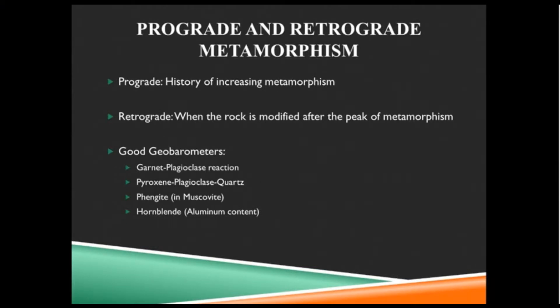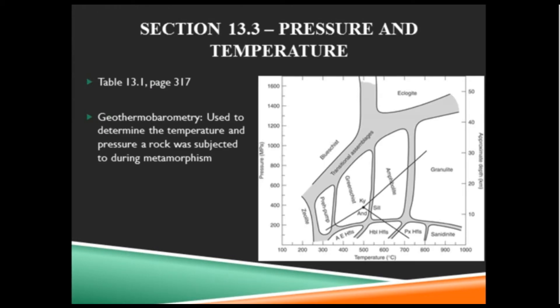Now talking about whether the rock changes from one thing to another when we bring it up and start looking at it in the lab, where the pressure and temperature have obviously changed, leads into talking about prograde and retrograde metamorphism. Prograde metamorphism means it's a history of increasing metamorphism - increasing pressure and temperature throughout the history of the rock. Retrograde is when the rock continues to be modified after its peak temperature and pressure, after its peak metamorphism.